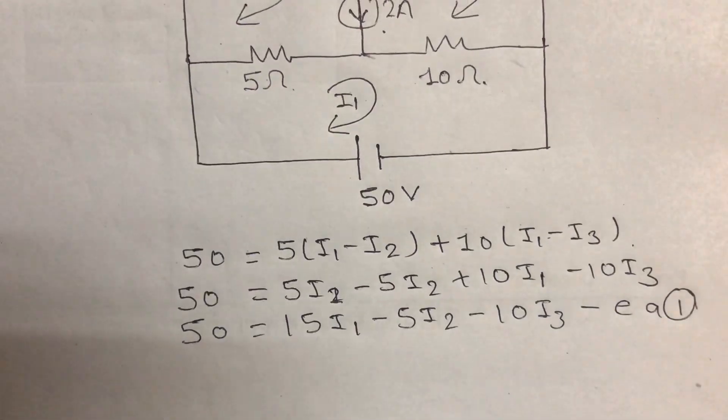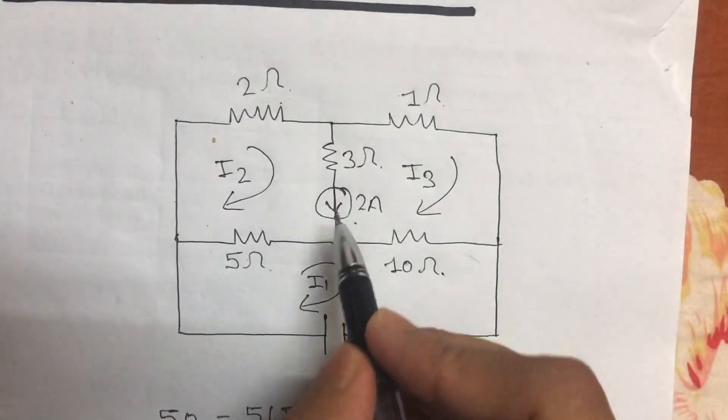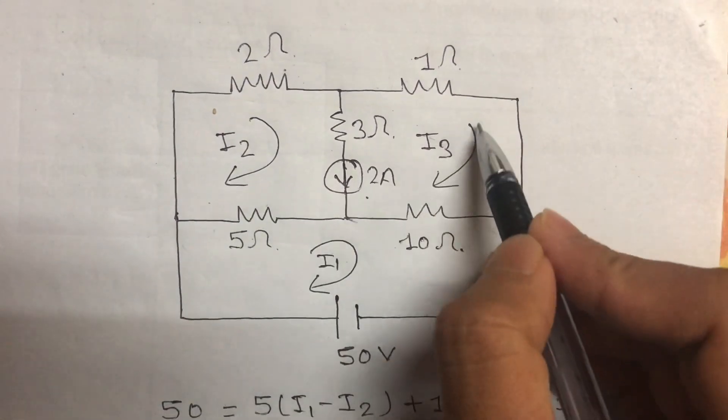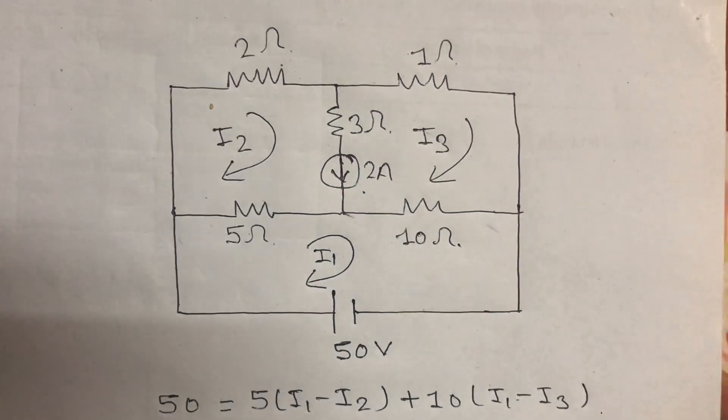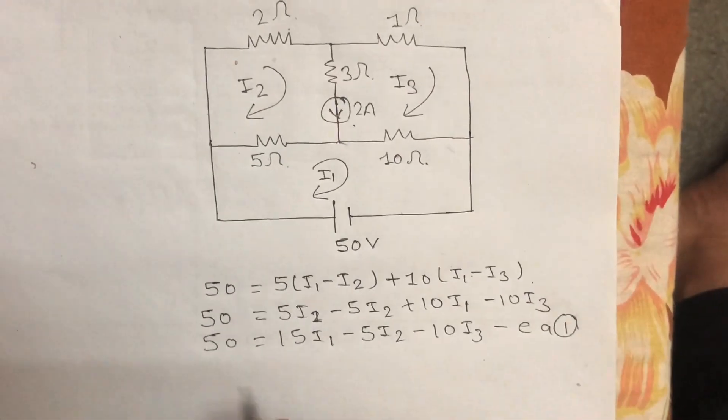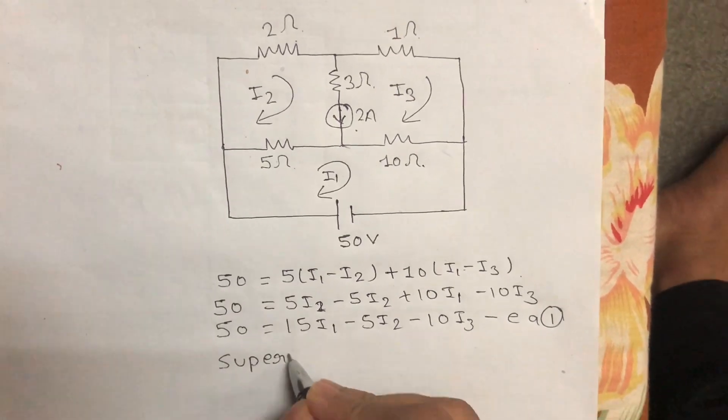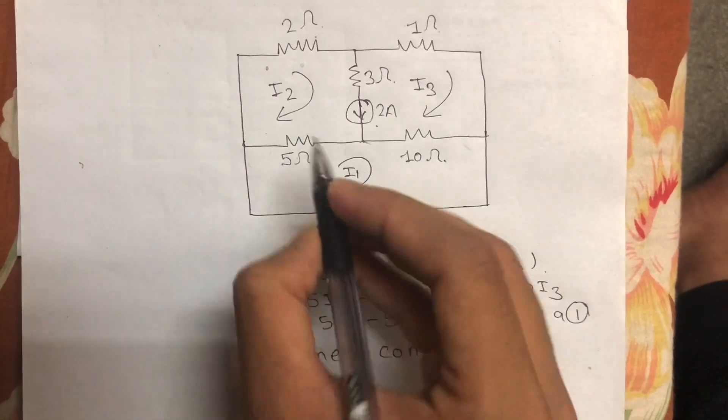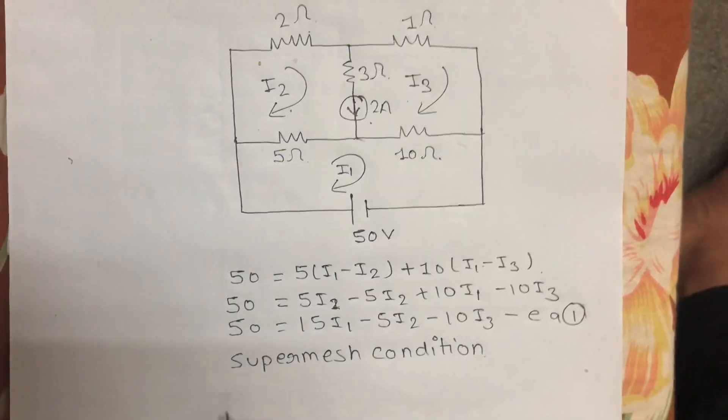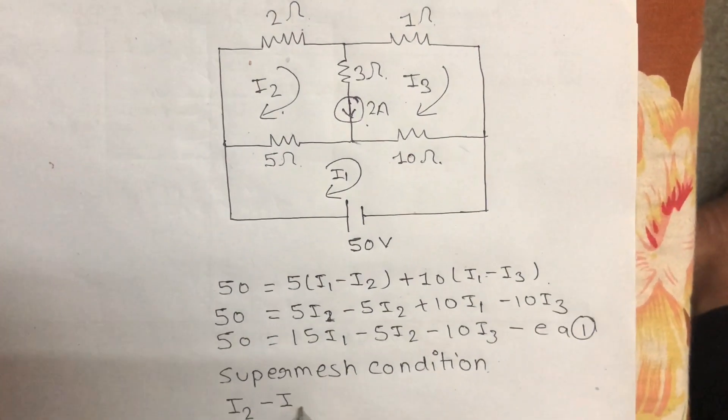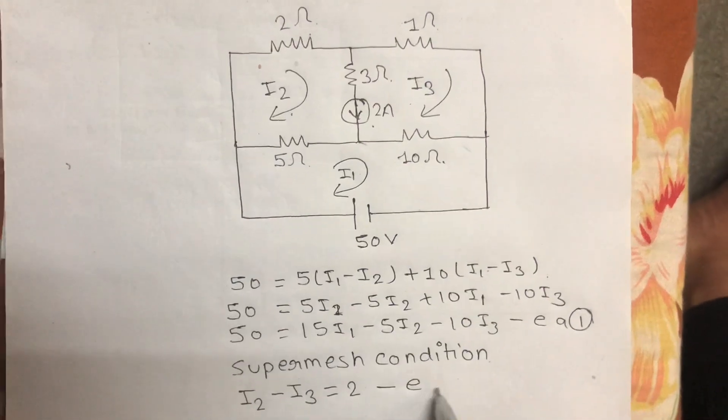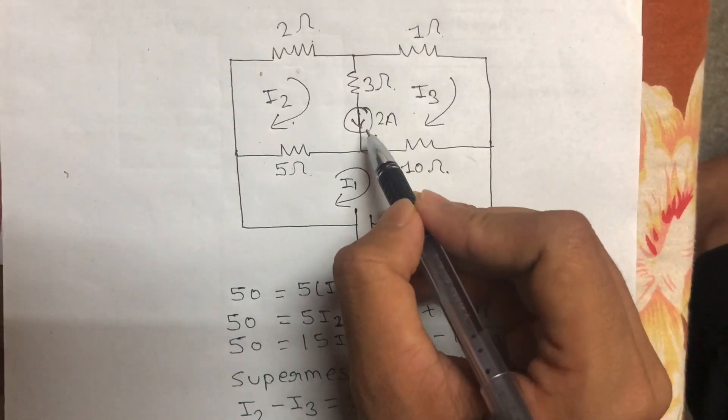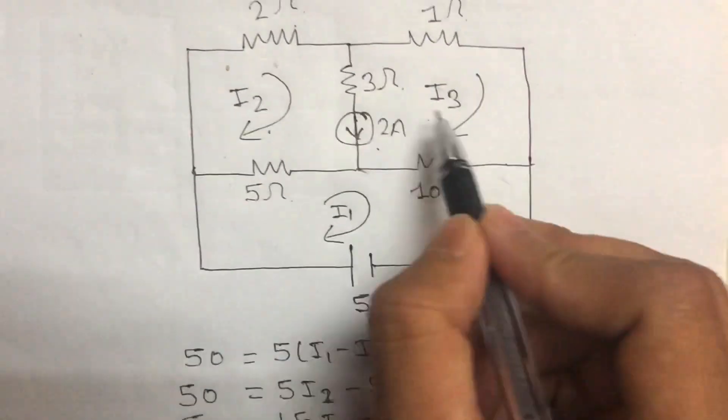Now for the super mesh condition, there's a 2 ampere current source. The super mesh condition is I2 minus I3 equals 2. This is because the 2 ampere current follows in the same direction, so I2 minus I3 equals 2. This is equation 2.